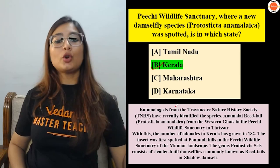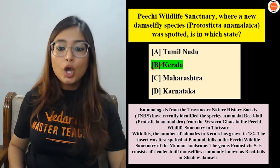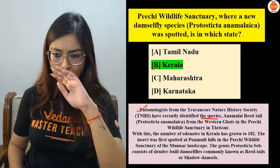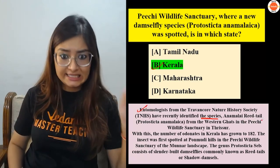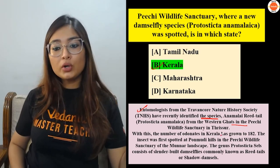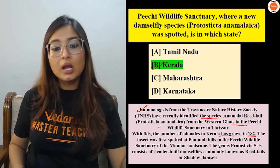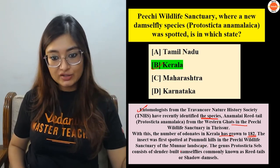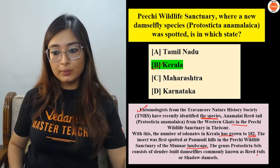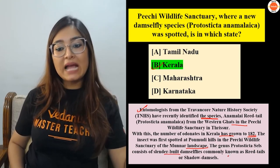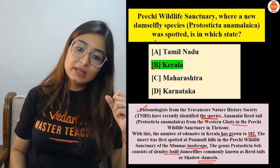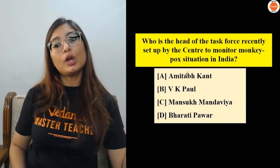The correct answer is again Kerala. Entomologists from the Travancore Natural History Society recently identified it. It is the Annamalai Reed's Tail from the Western Ghats in the Pishi Wildlife Sanctuary, which is in Thrissur, Kerala. With this discovery, the number of Odonates in Kerala is now 182. This insect was identified in the Munnar landscape.